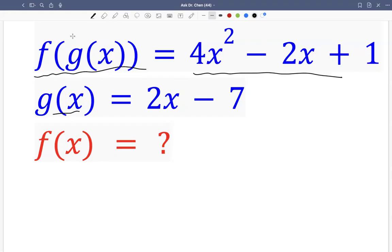So let's substitute this g of x into 2x minus 7. So let's rewrite here. So f of 2x minus 7 equals to 4x squared minus 2x plus 1.